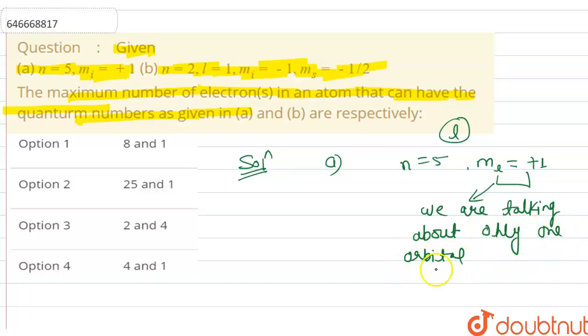If l equals to 1, then definitely m equals to 0, plus 1, minus 1. So here we have only plus 1, that means we are talking about only a single orbital.